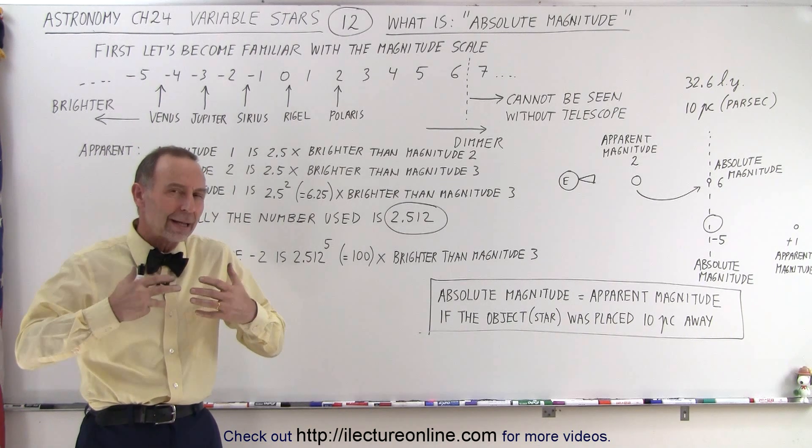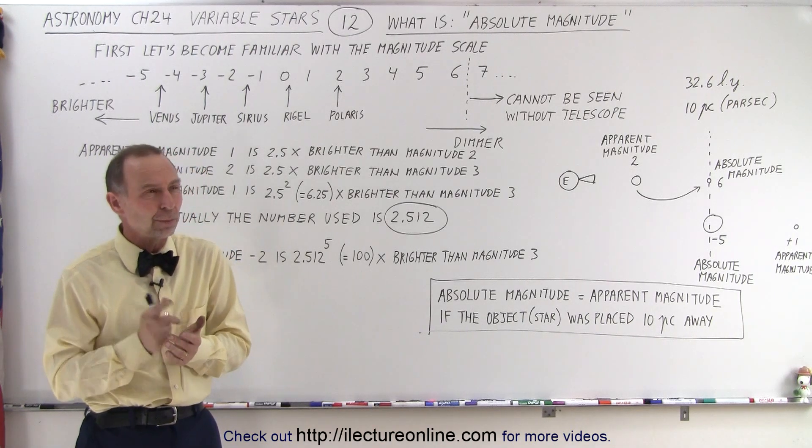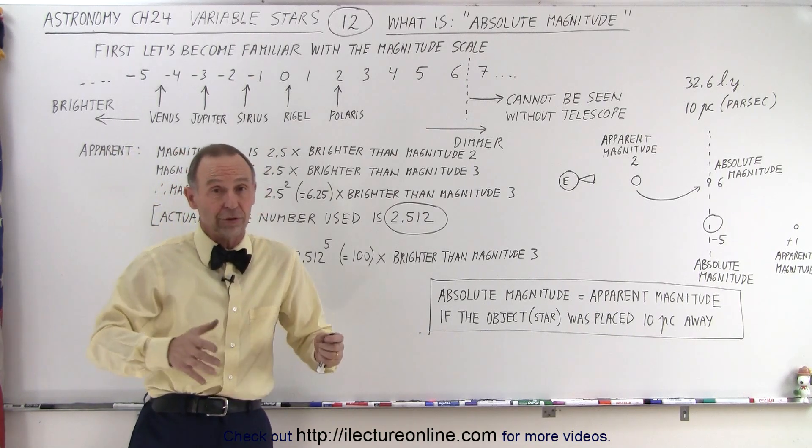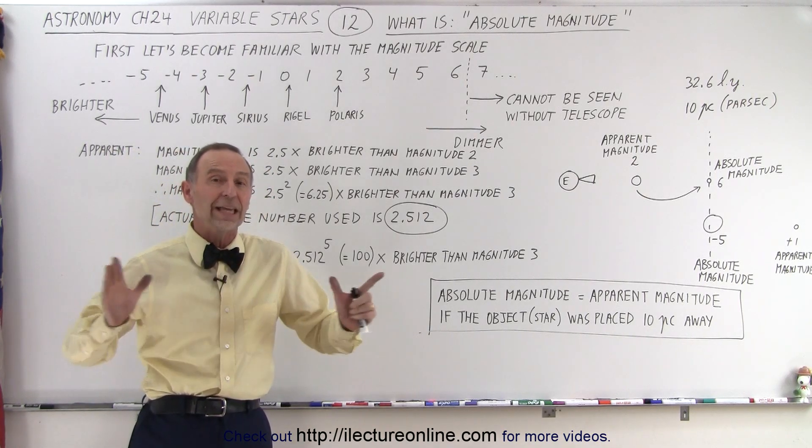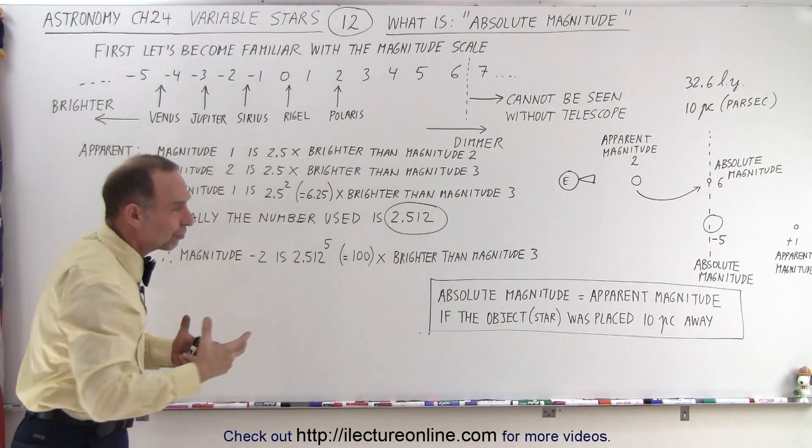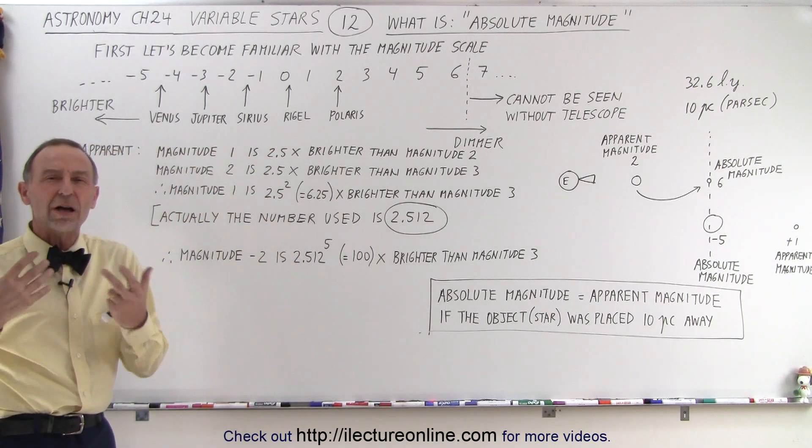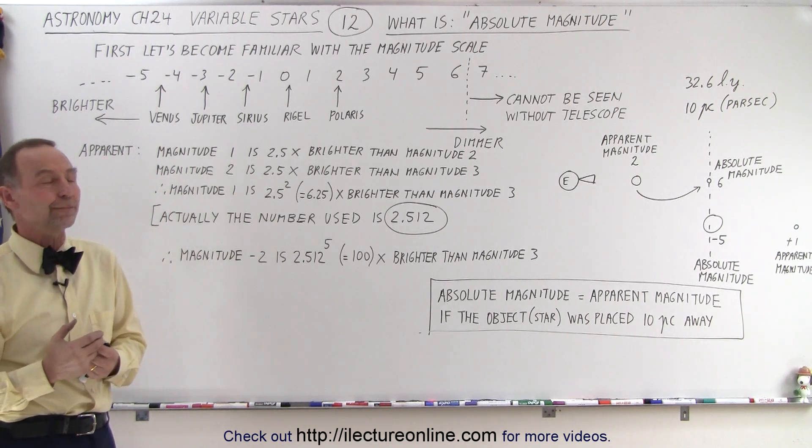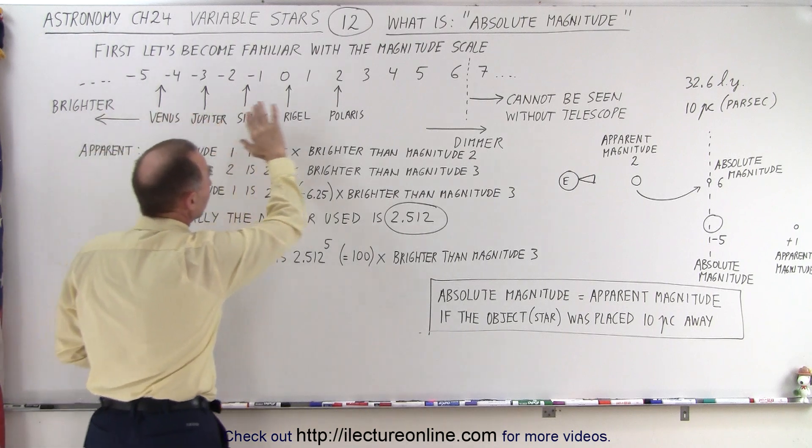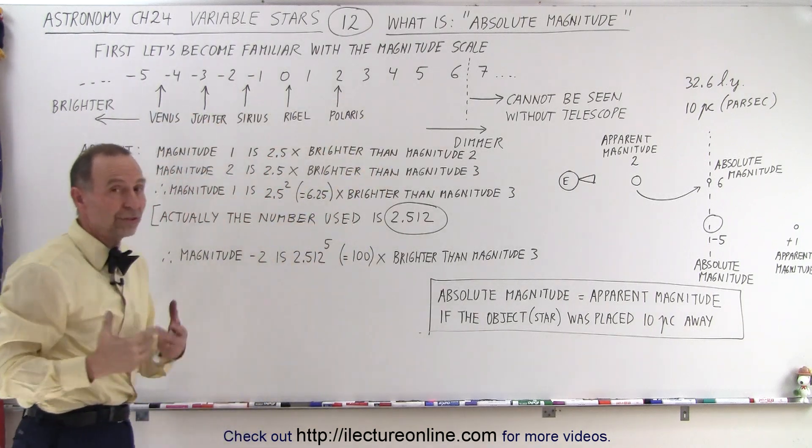So what do we mean by absolute magnitude? Well, first let's take a look at what we mean by apparent magnitude, and first let's talk about the magnitude scale period. The magnitude scale is a means of determining the luminosity or the brightness of an object.